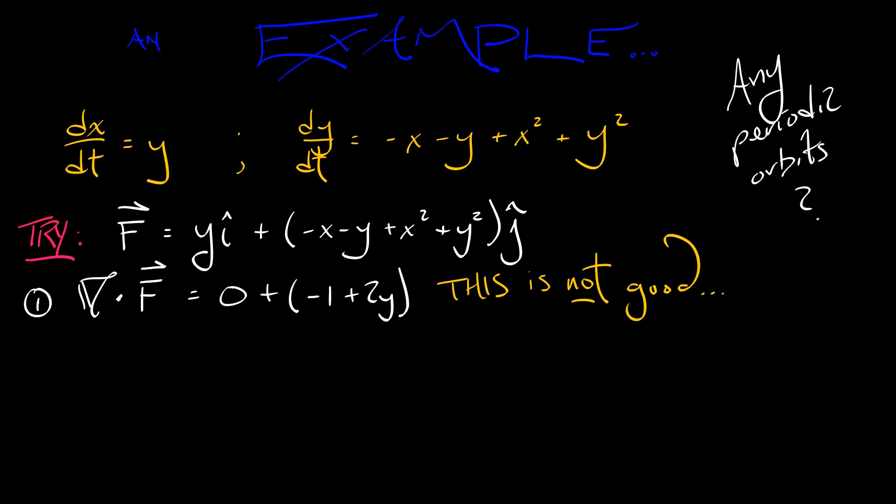Now, this is not so good because this takes on both positive and negative values in the plane. And I'd like to rule out periodic orbits over the entire plane. From this alone,